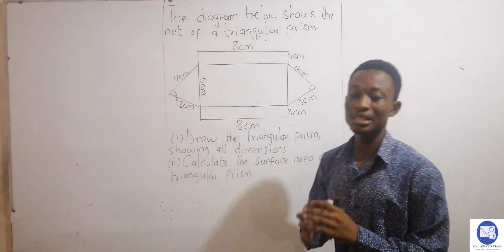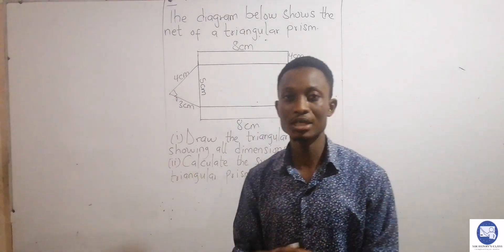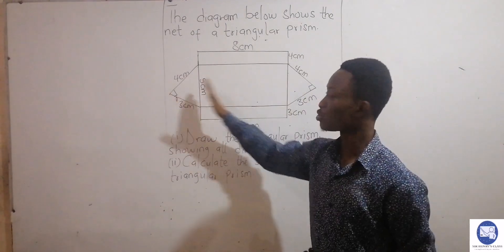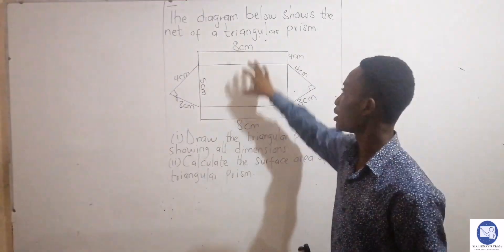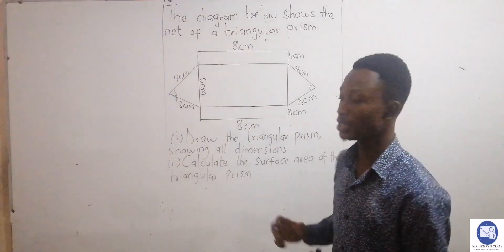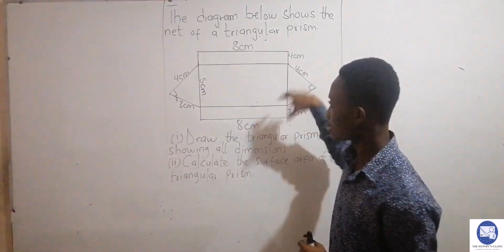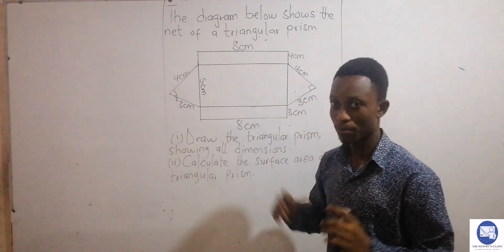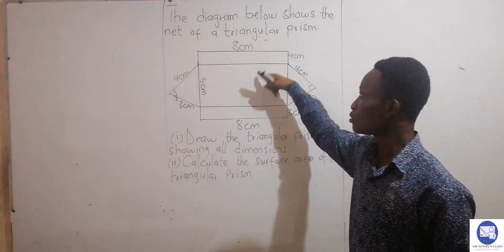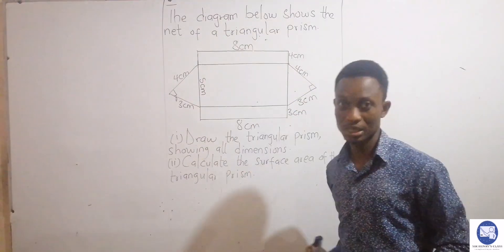Now we see the nets. Nets are the individual shapes that are merged to get a complete shape. Here we have two triangles and three rectangles merged to get a prism. We should draw a complete prism using this net, so I have my marker and my ruler and I'm going to draw the complete prism.